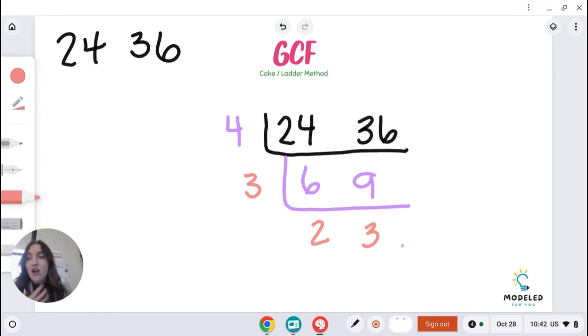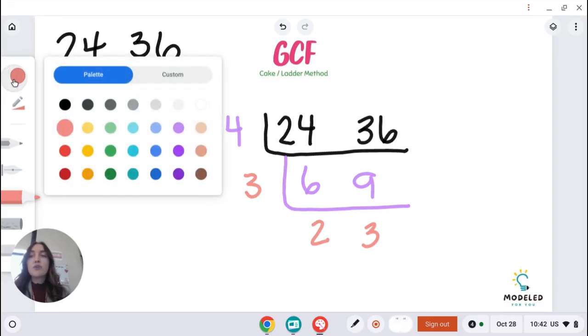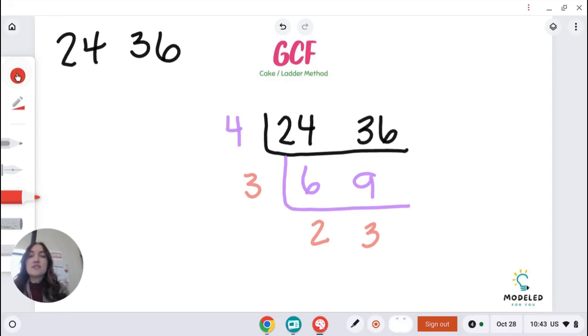Now, 2 and 3 are as low as they could possibly get. There's nothing else that I can pull out of these two numbers. So what you're going to do now is you're going to make the letter G because we're working with GCF, and you're going to make it on the side. See the letter G?